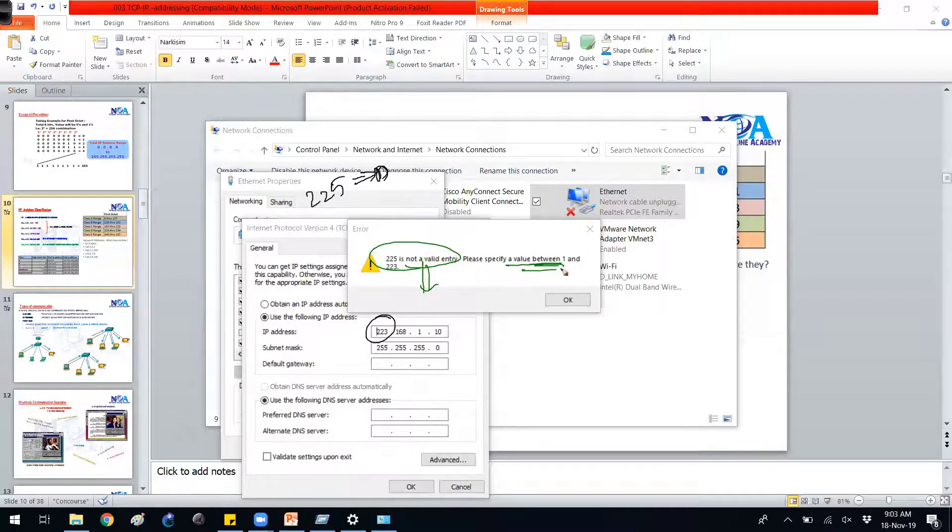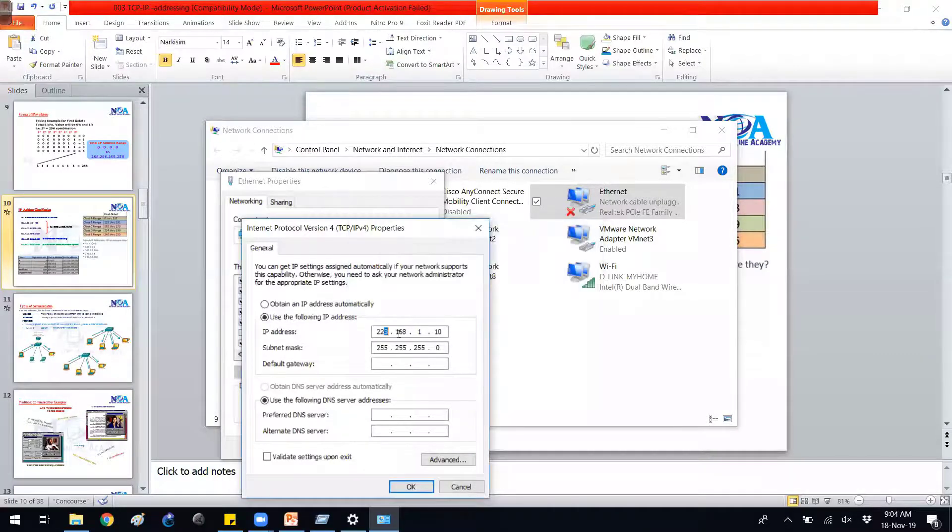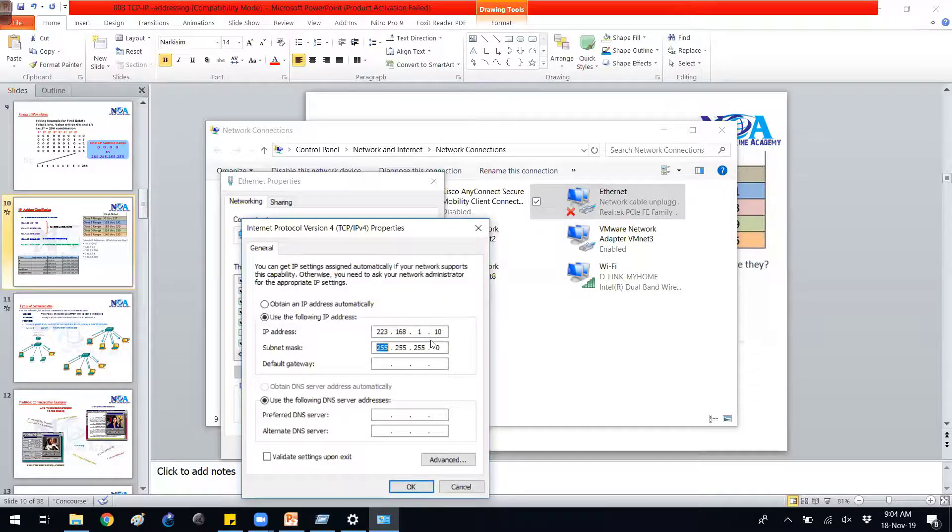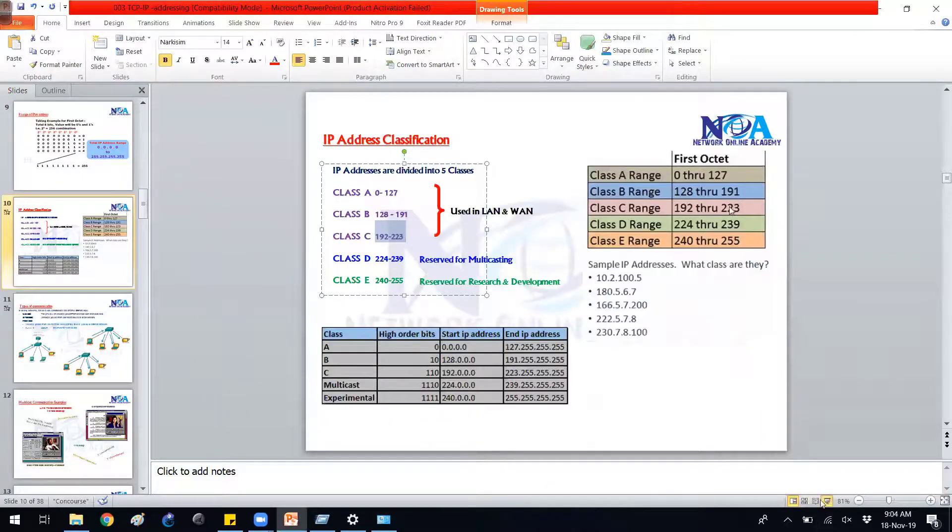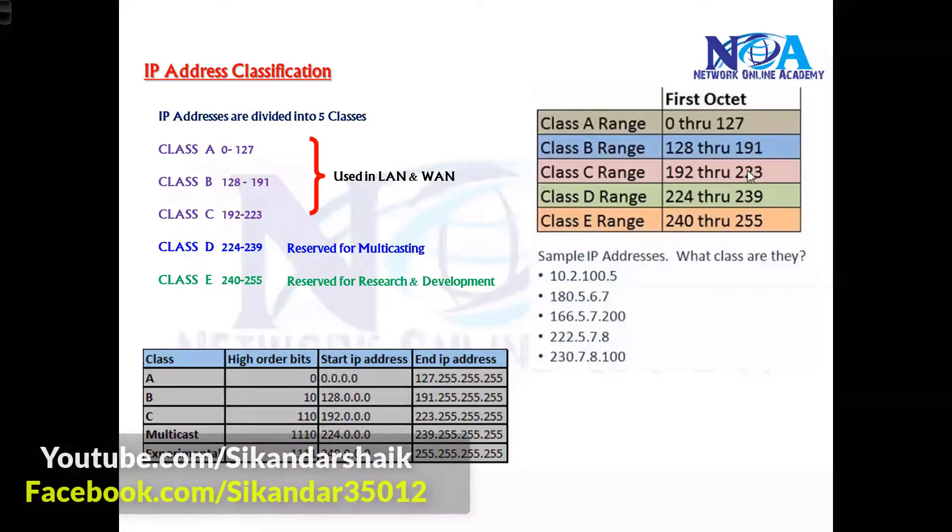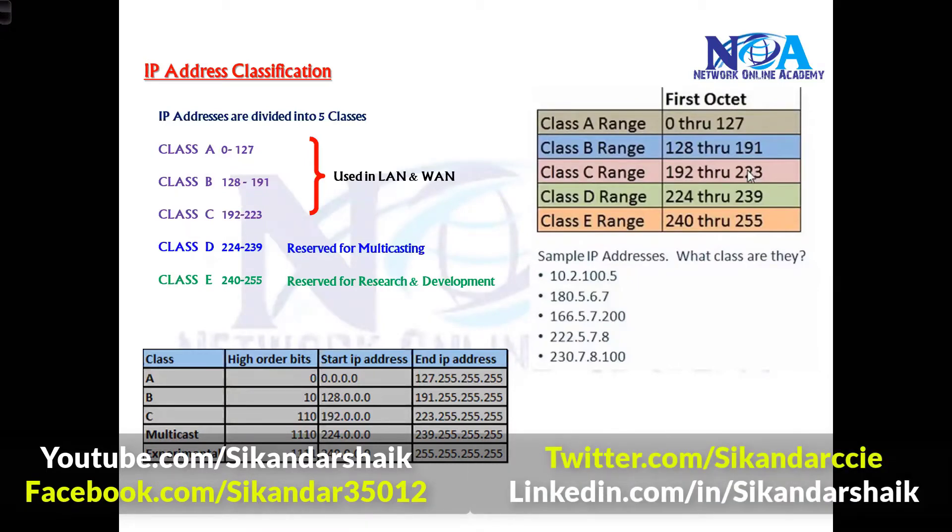So basically it should be anything from 1 to 223. 223 is the last address of the class C. So we cannot use class D. Even if you try any address like 250 also, the device is not going to accept. 250 is not a valid entry. Please specify the values only between 1 to 223. But the remaining addresses you can use anything. Like here I can use 255, not a problem. But remember the first portion, because the range is divided based on the first portion only. So identify based on the first portion. The ABC classes we use in normal LAN and WAN communications where we can assign to any device in the network, but whereas class D or class E addresses are reserved and we cannot use them in our normal networks.